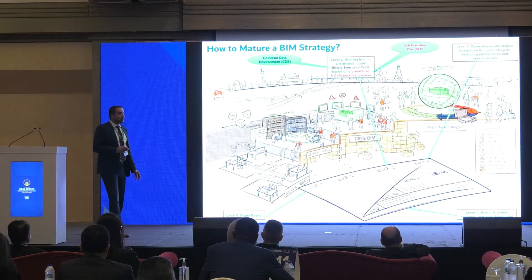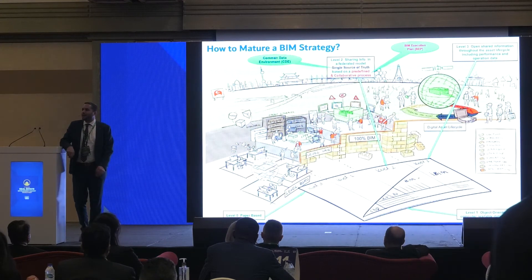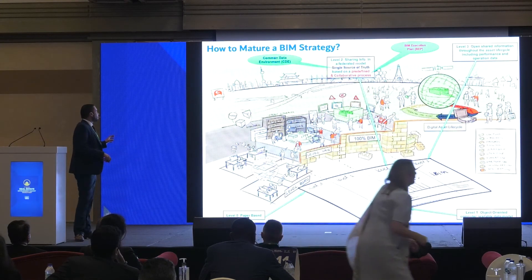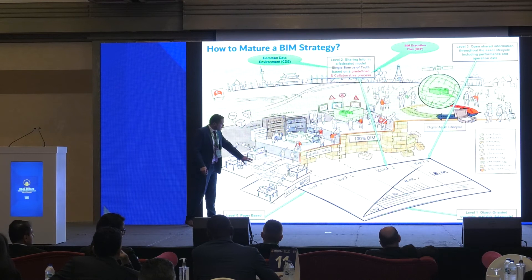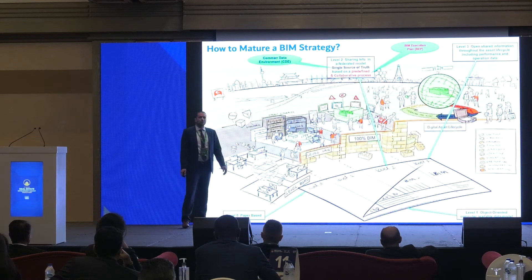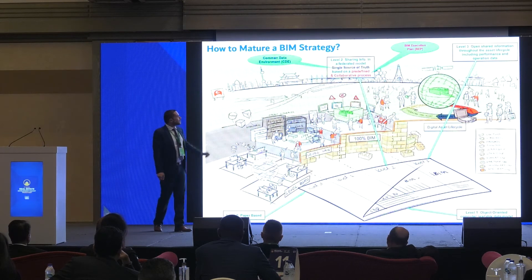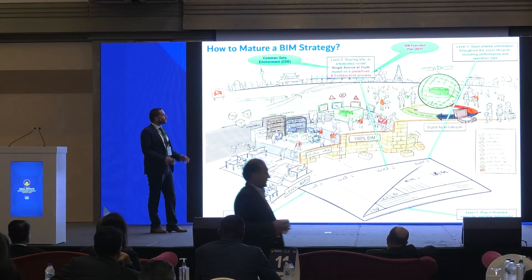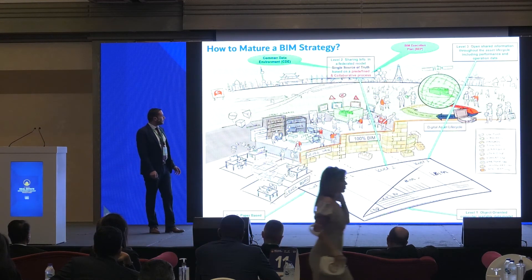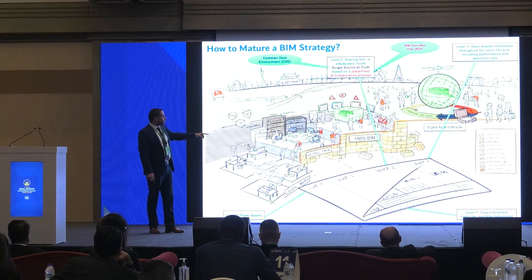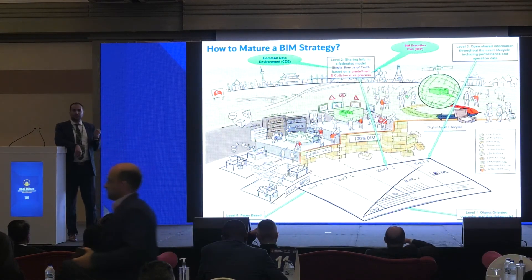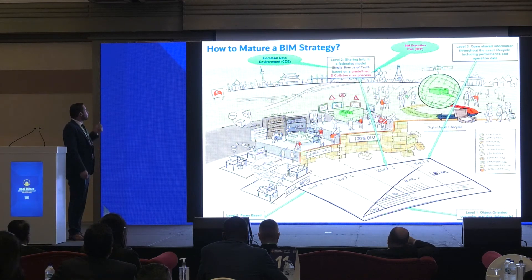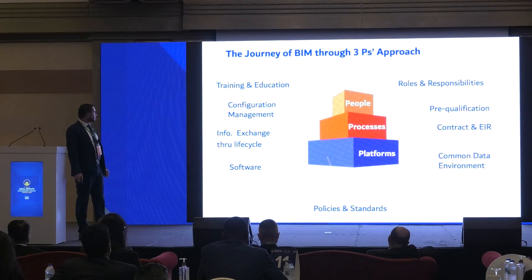How to build BIM maturity — how to mature in a BIM strategy — as we can see in this infographic. I like it because it shows how we can move from a life fully with drawings and miscommunication between people and too much use of paper, until we reach the level of open shared information throughout the life cycle, which includes performance and operational data. Going through level two, which is very important and where most companies are right now, you need two major things: the BIM execution plan, which shows each party what to do, and the collaboration process in the common data environment.